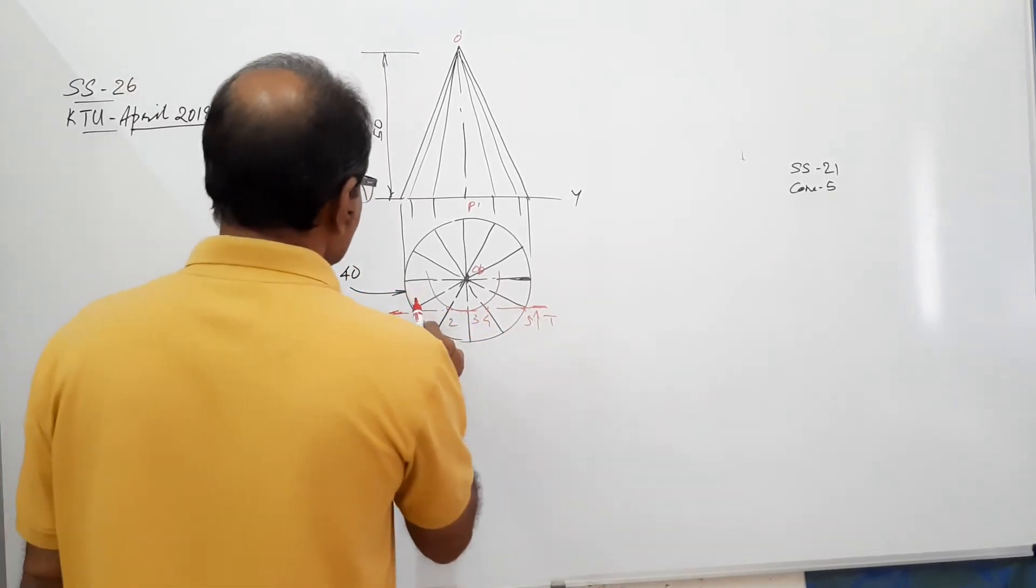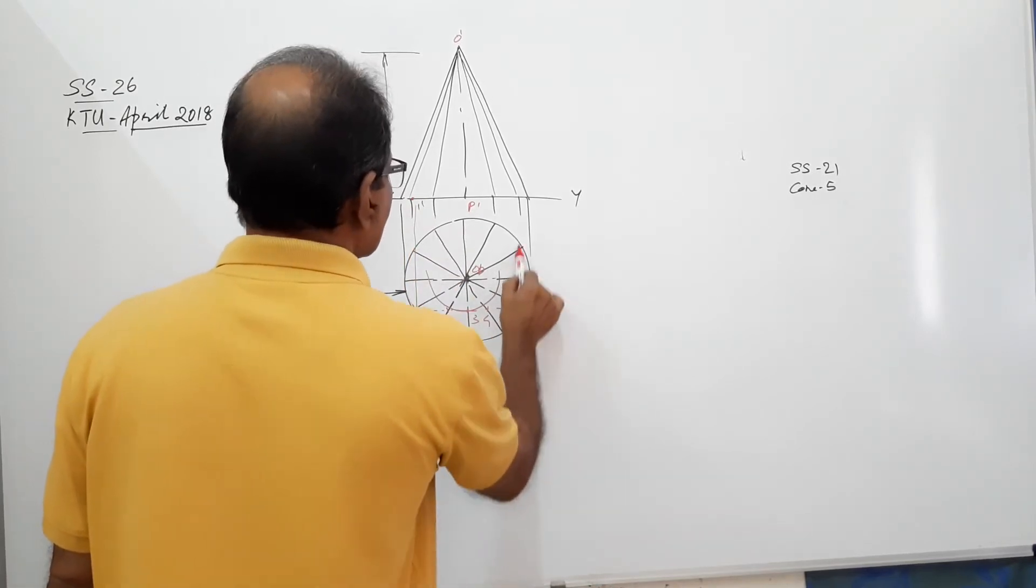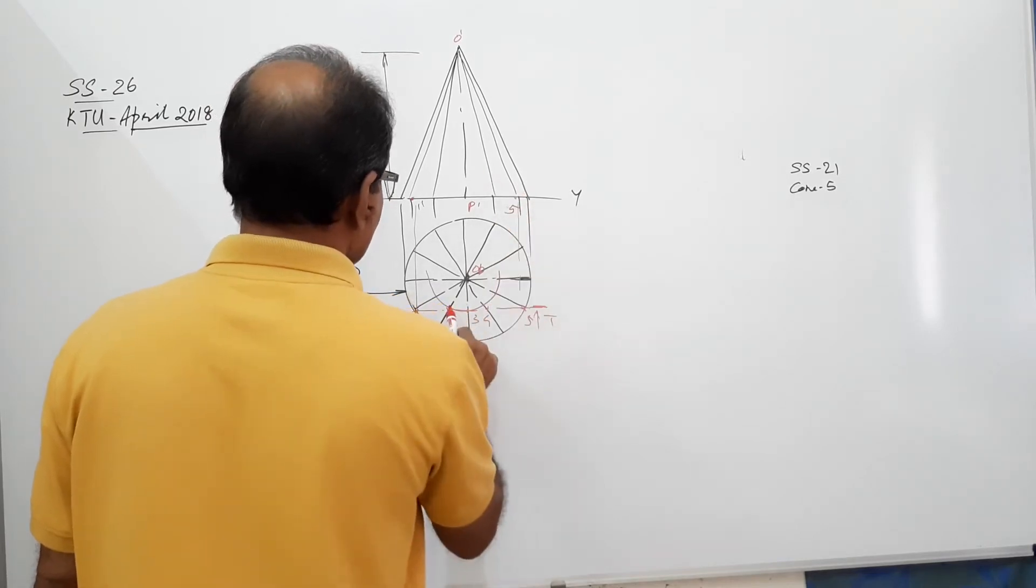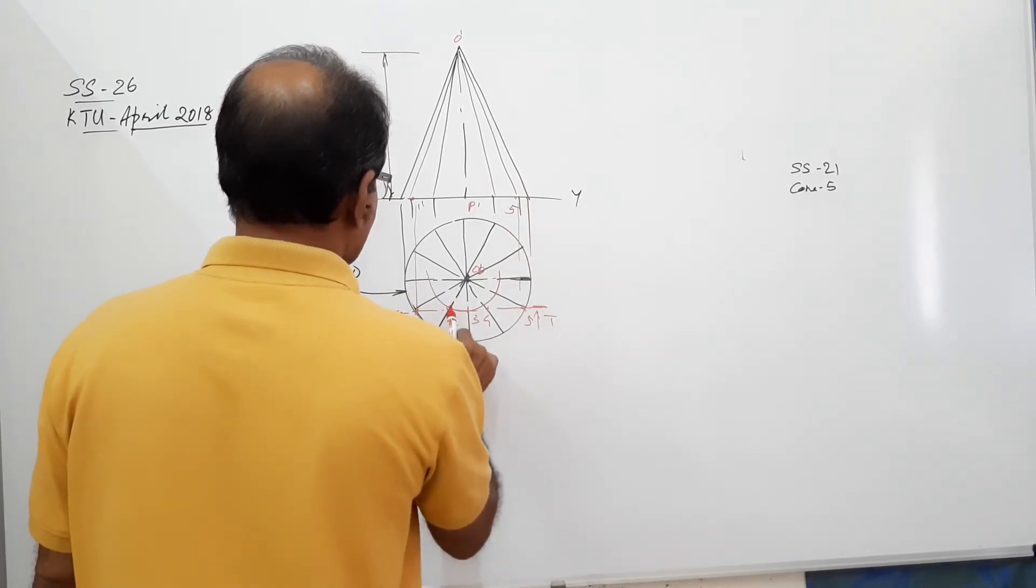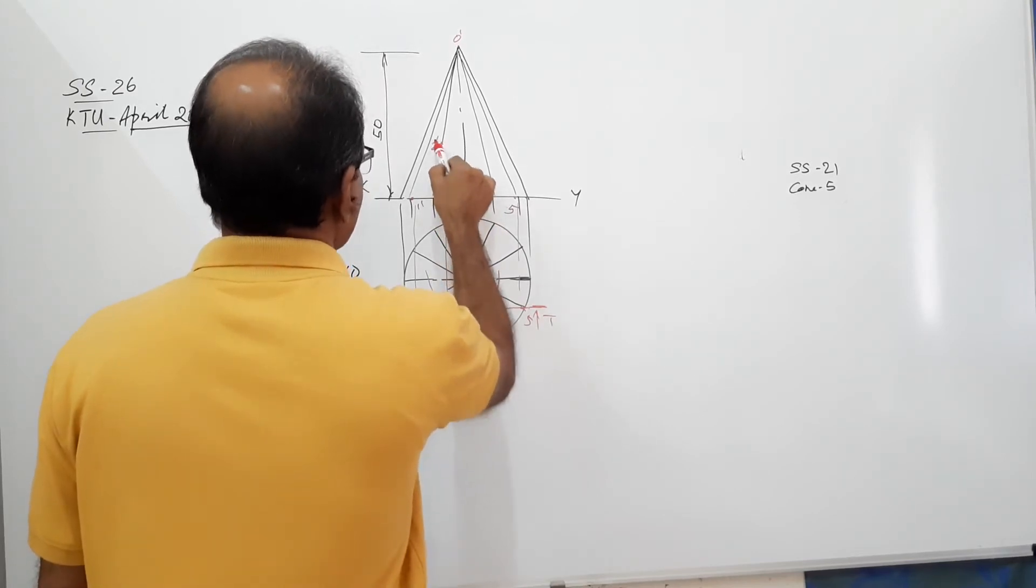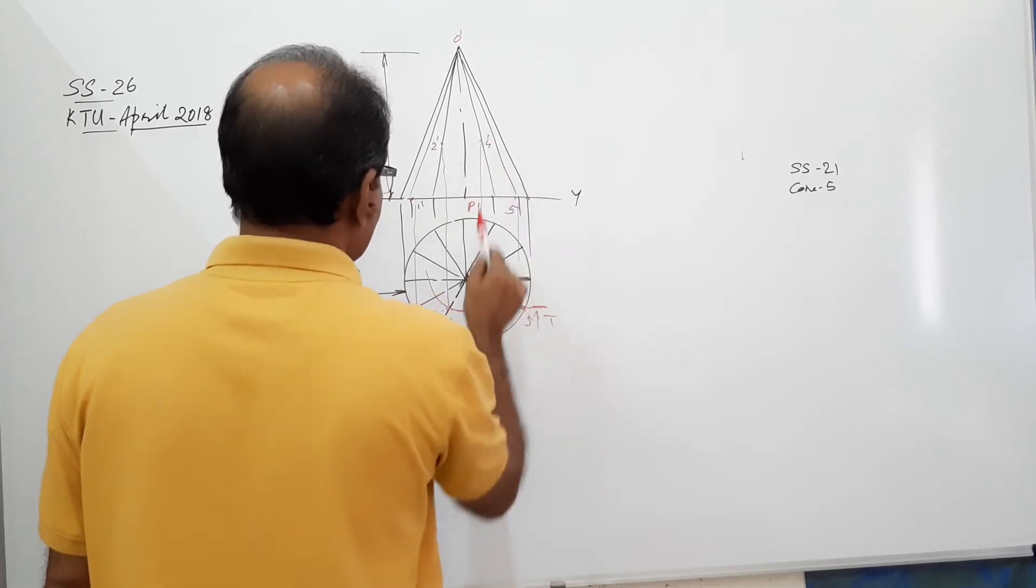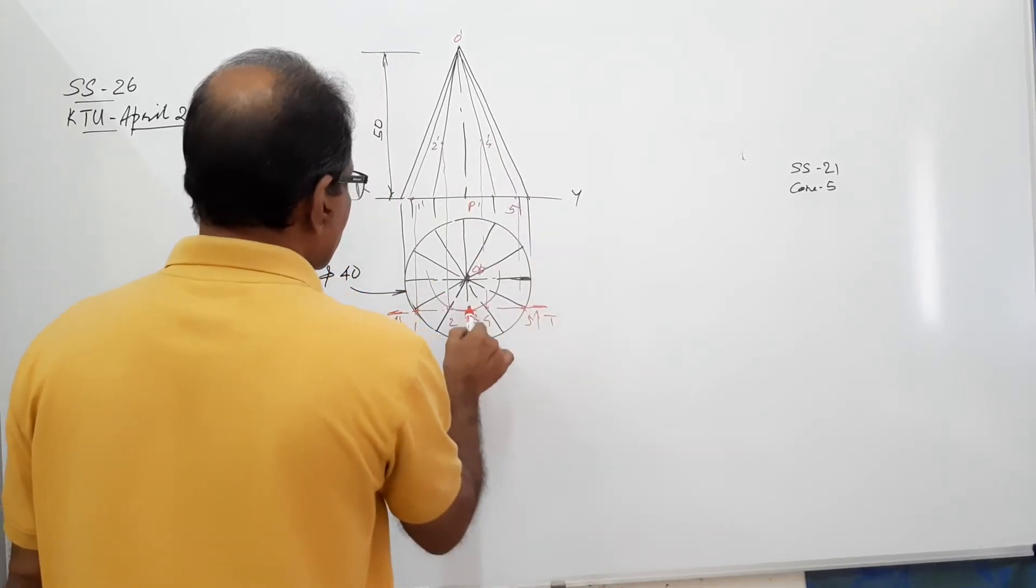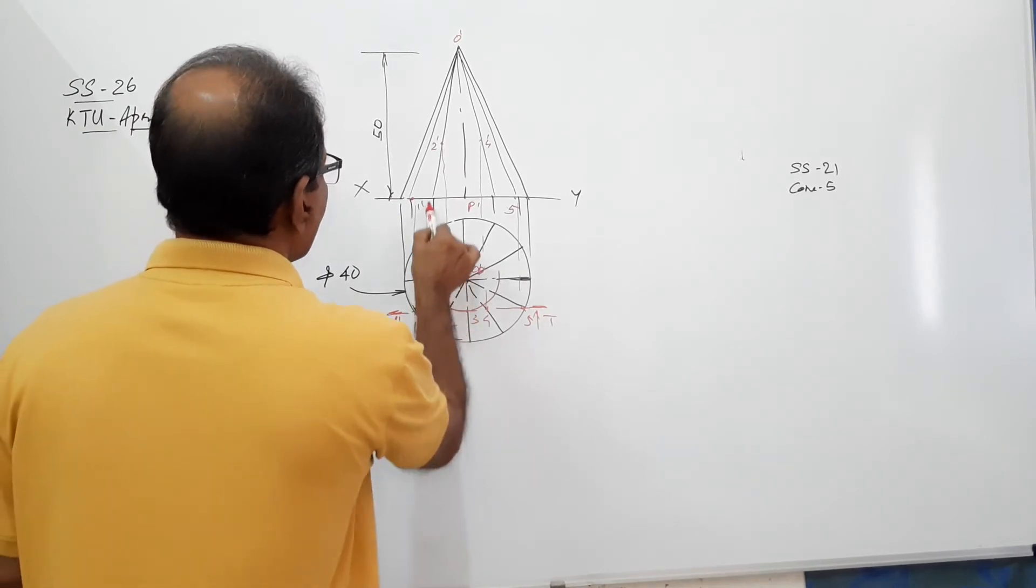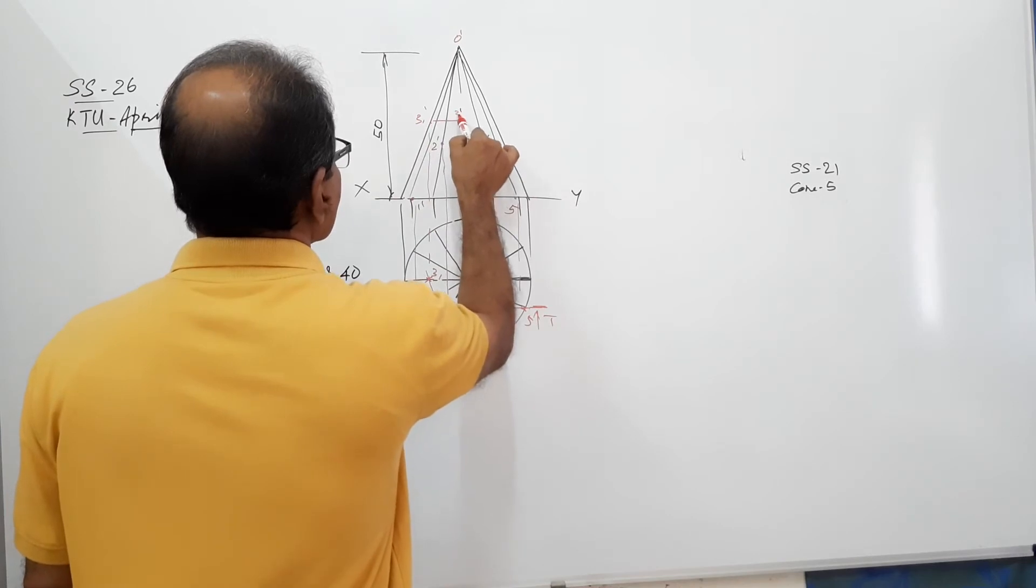Project them to the elevation. Project them, 1 dash, 5 dash, 2 dash, 4 dash. To get 3 dash, take this arc, 3, 1, go up, 3, 1 dash, go to center, 3 dash.